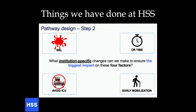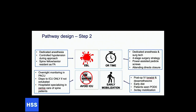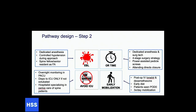That data helped us develop an enhanced recovery pathway at HSS, looking at four major elements to improve efficiency and quality. To control EBL, we had a dedicated anesthesia team, controlled hypotension during exposure, muscle relaxation, and a spine fellow or senior resident as first assist. For operative time, we used a dedicated surgical technician, a four-stage surgery approach where everyone in the room knows where you are in the operation, and the attending present for closure — shaving off about 20 minutes.